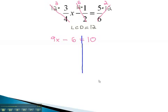Notice, now we have a two-step equation which we can quickly solve. First, by adding and subtracting, moving away from x, we add 6 to both sides.